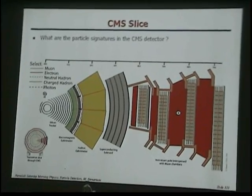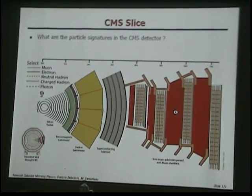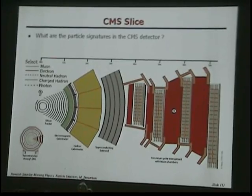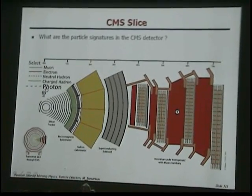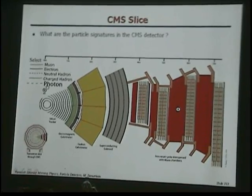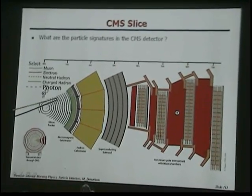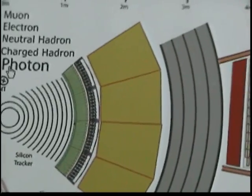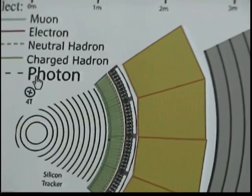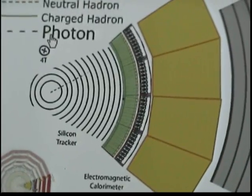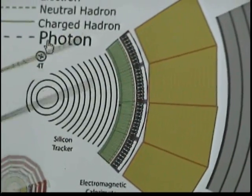Pick a particle — anyone. A photon. Okay, what's the signature of a photon? So this is shown as a dashed line. The dashed line is because a photon is not charged, so it won't leave a track in your tracker. A photon interacts electromagnetically, so it will leave an electromagnetic shower in the electromagnetic calorimeter.